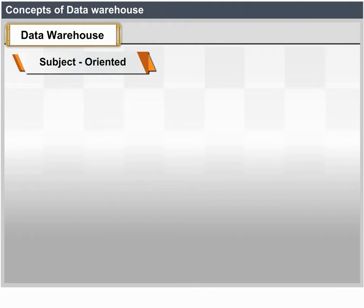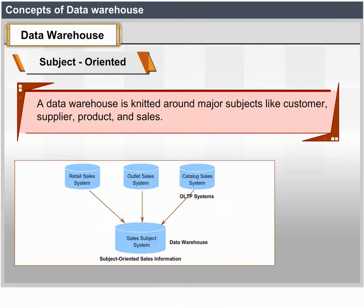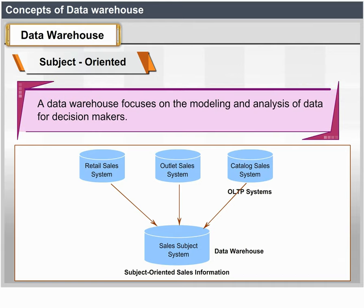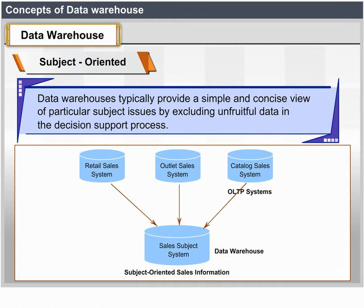Subject-oriented: A data warehouse is organized around major subjects such as customer, supplier, product and sales. A data warehouse focuses on the modeling and analysis of data for decision-makers. Data warehouses typically provide a simple and concise view of particular subject issues by excluding data that are not useful in the decision support process.